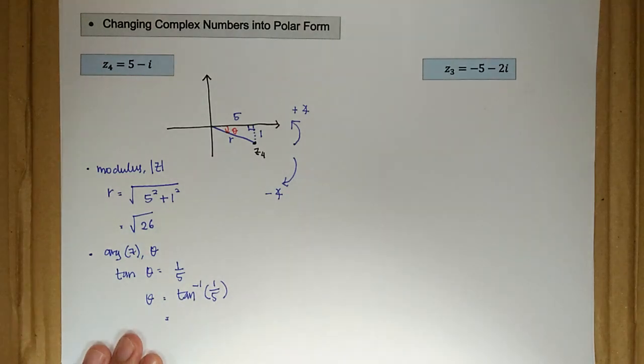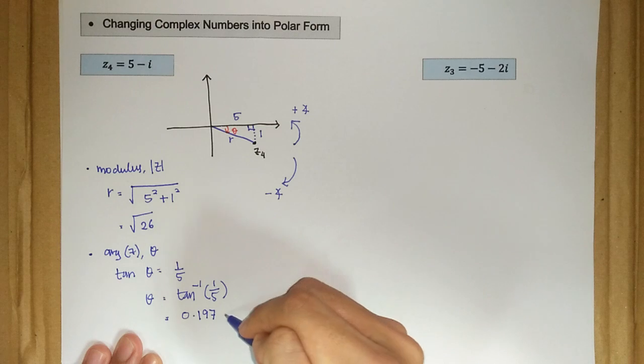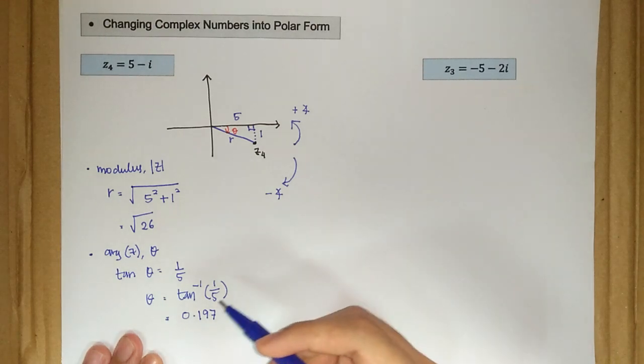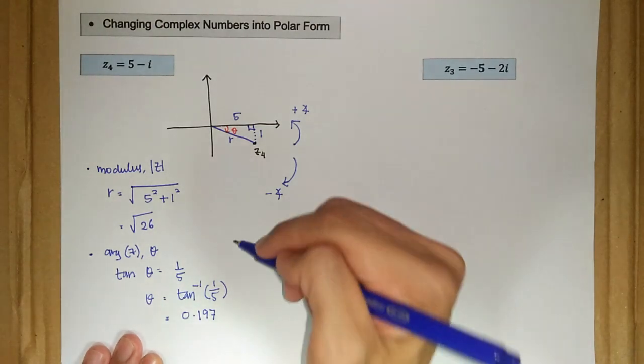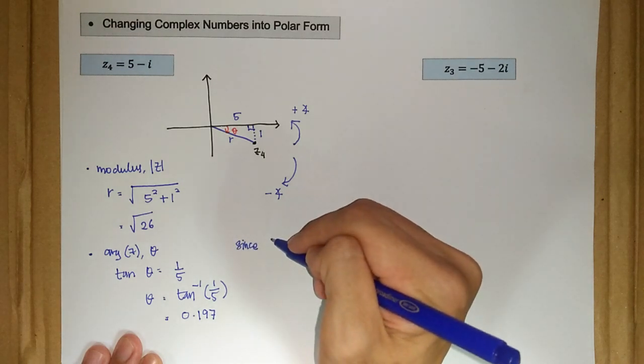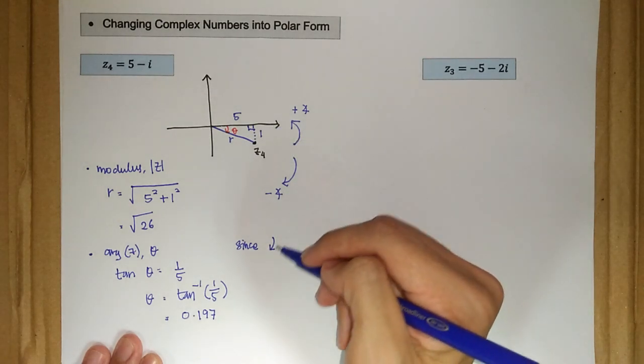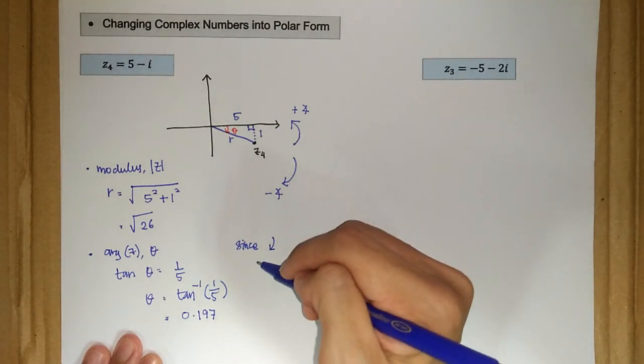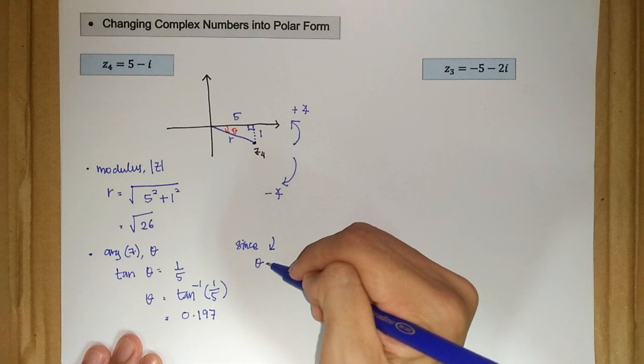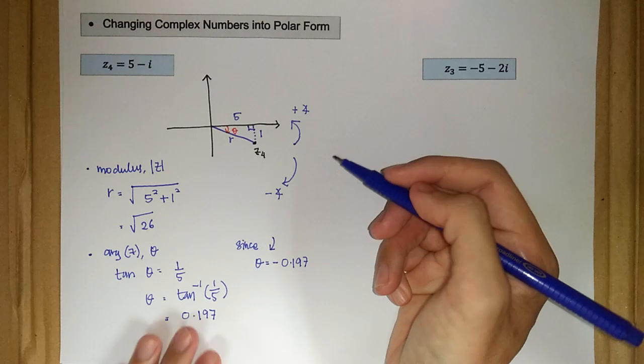And arctan 1 over 5 in radian is 0.197. But now, since it rotates in clockwise rotation, the theta now is negative 0.197.